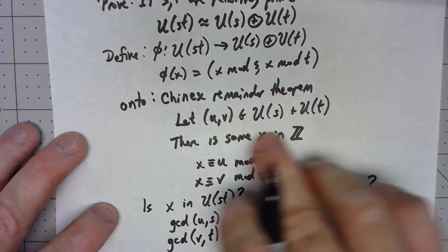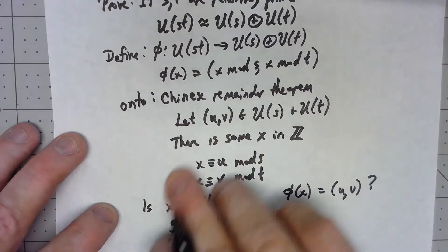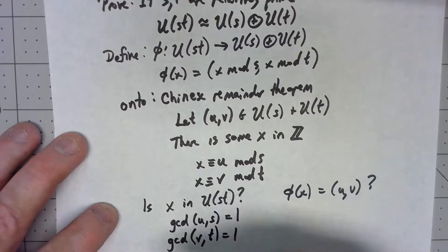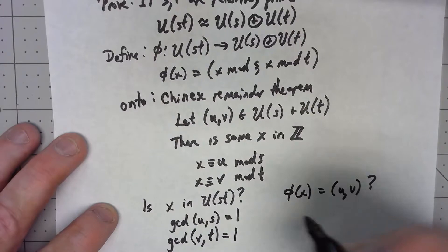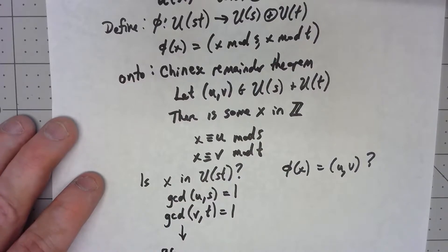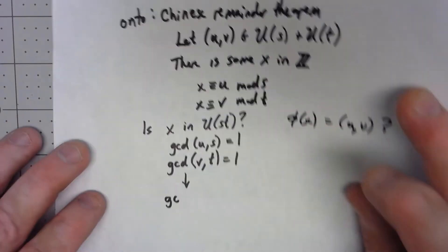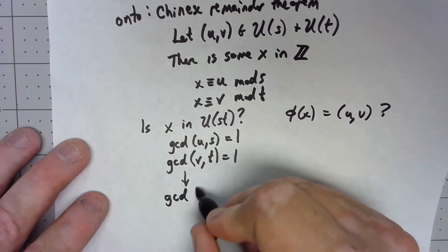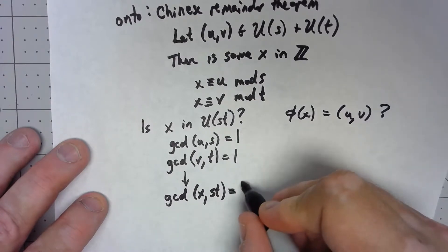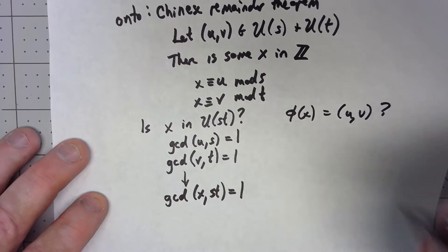Because of that, and because of these congruences here, it's a little bit more number theory, this is more advanced than I would expect in this course. Because of all those things, the gcd of x and st has to be 1. And there we go.